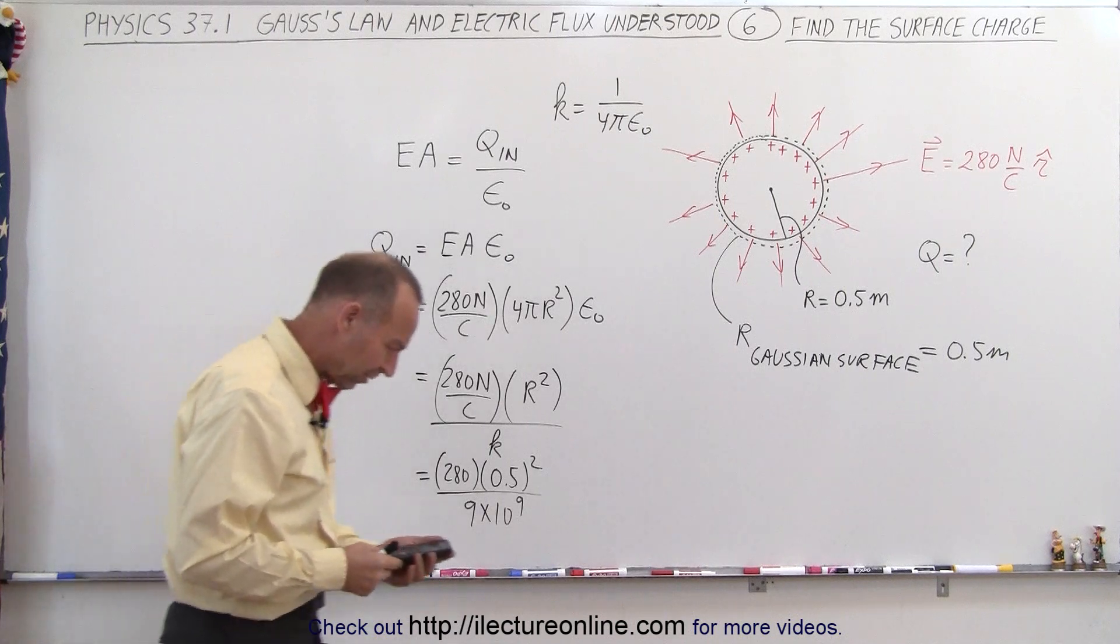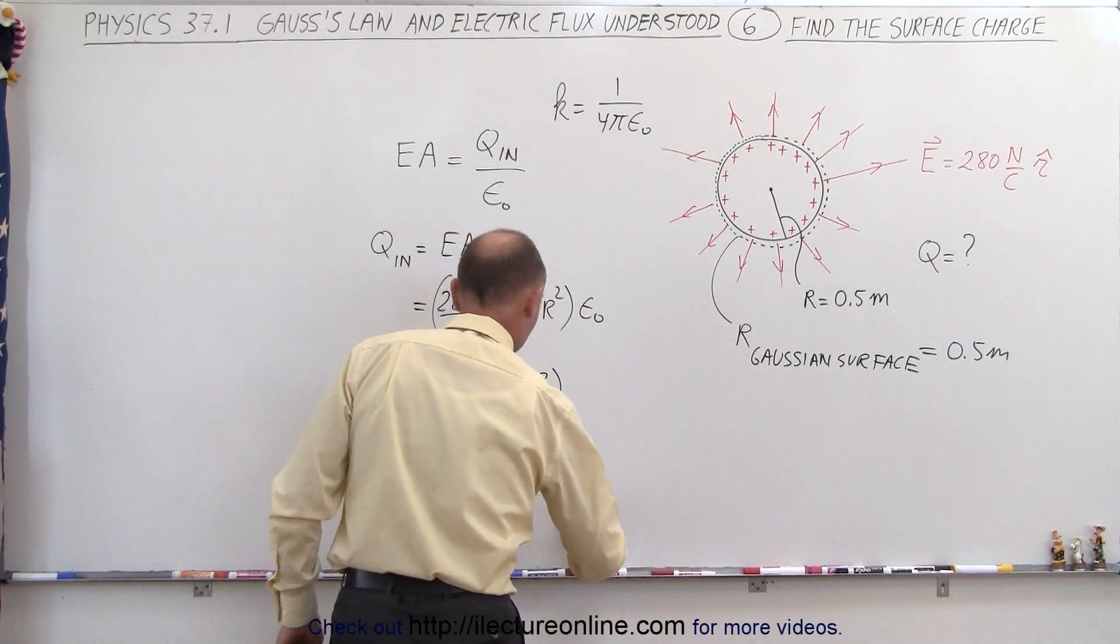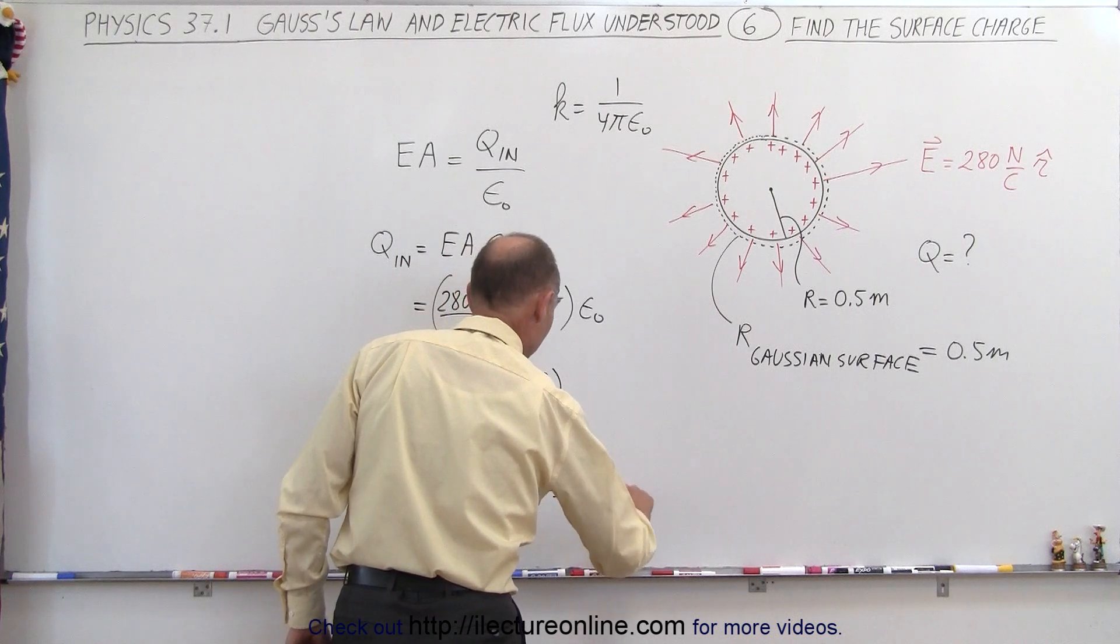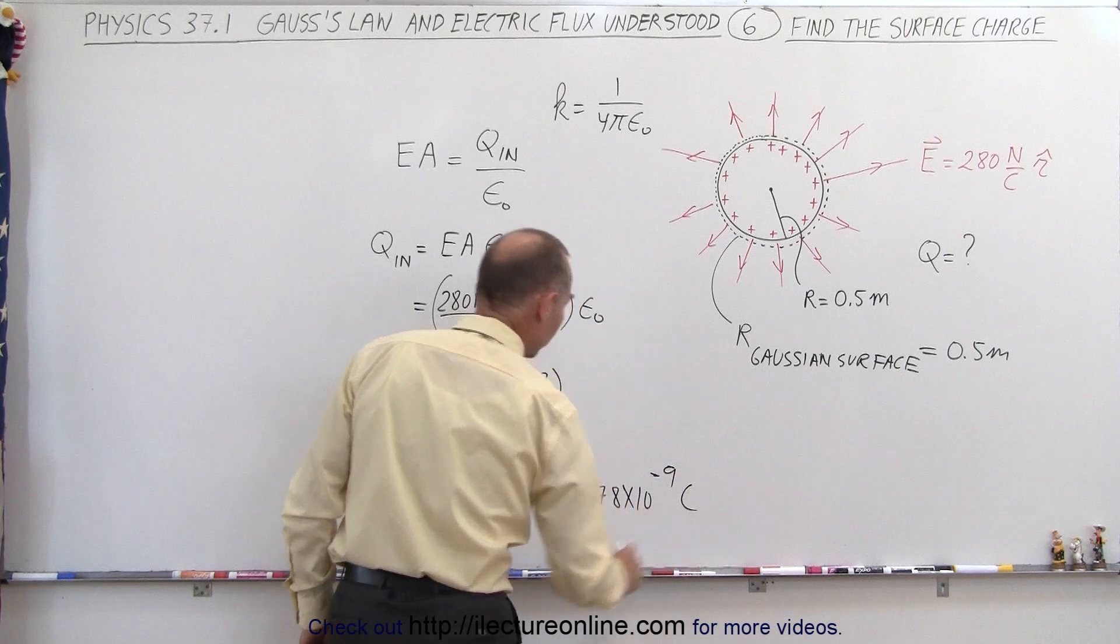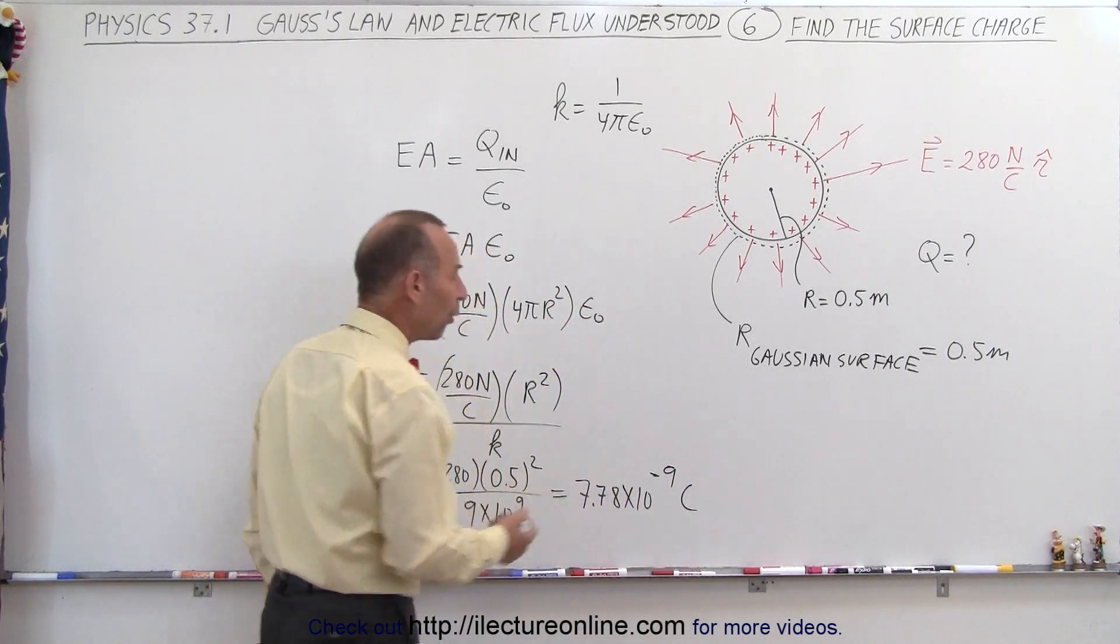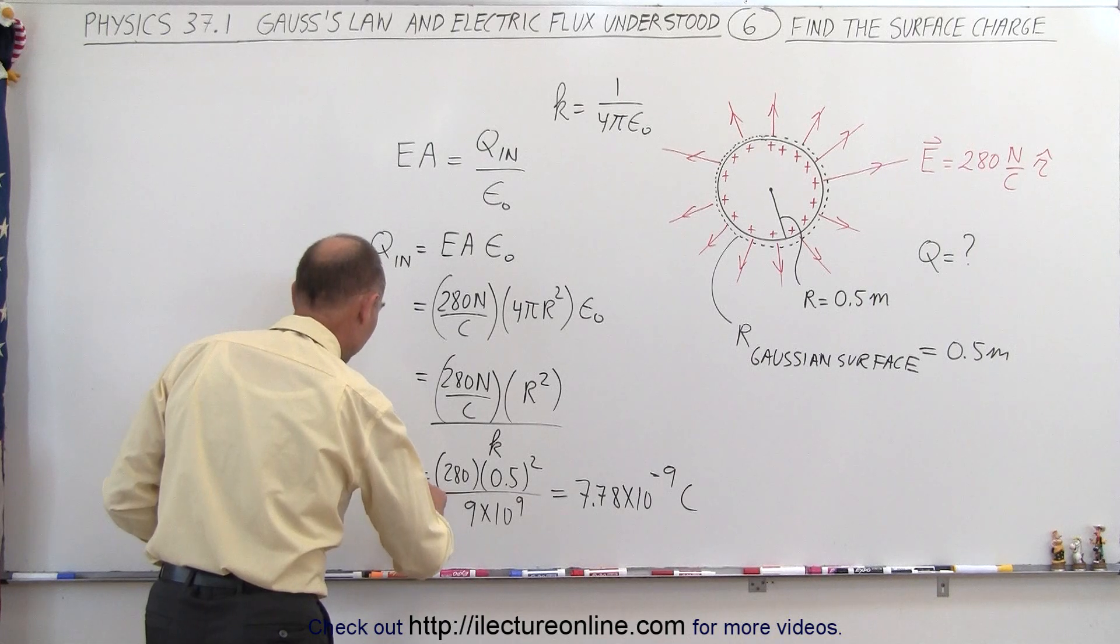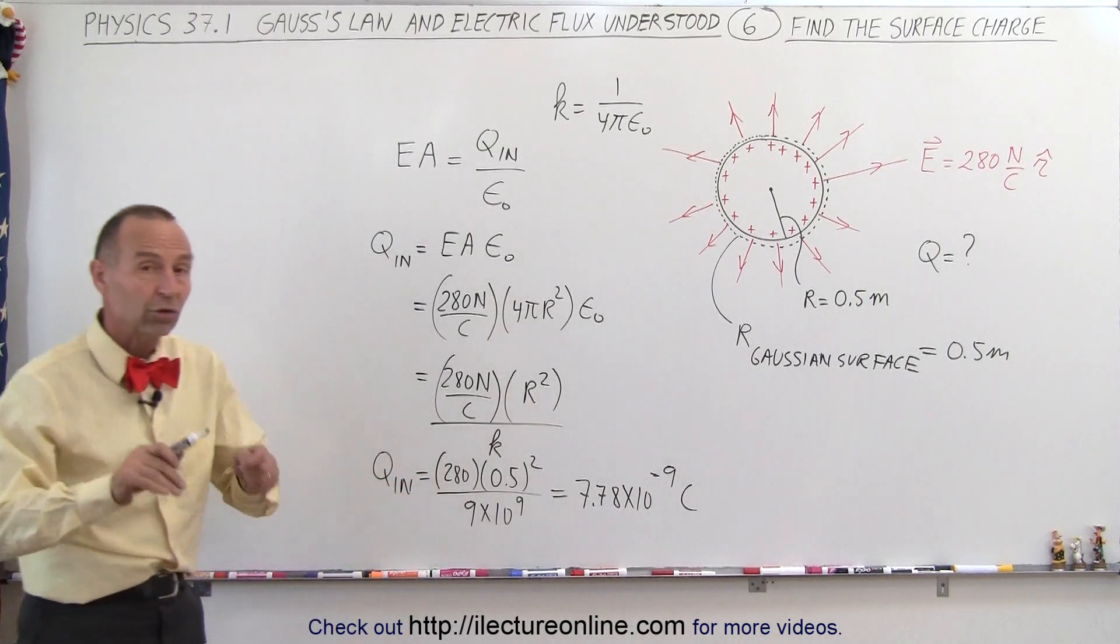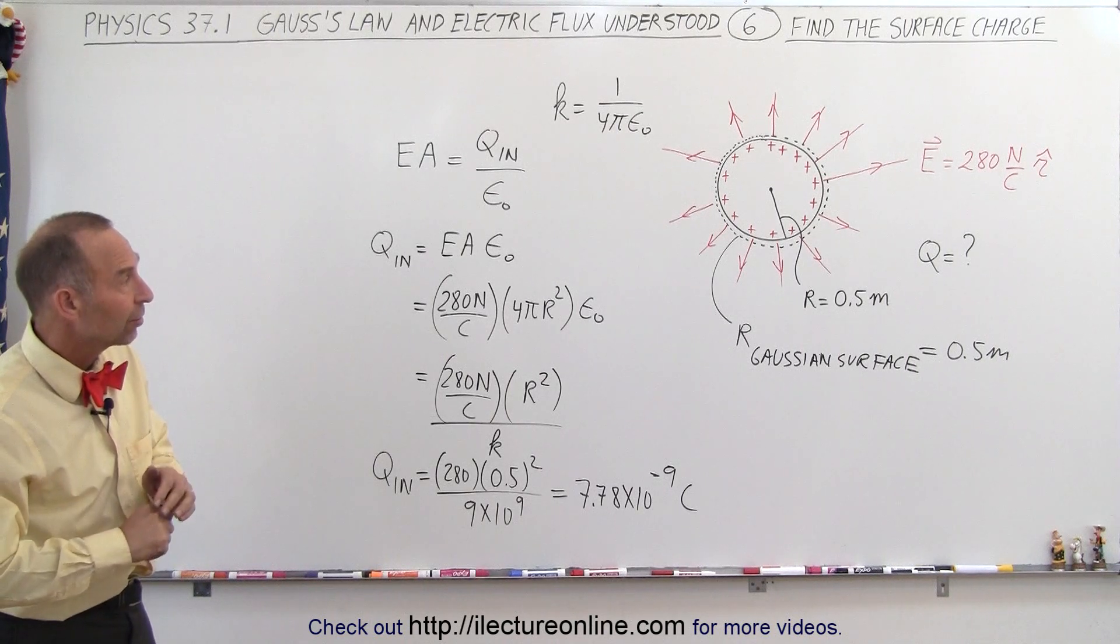And so it gives us 7.78 times 10 to the minus 9. So this is equal to 7.78 times 10 to the minus 9 coulombs. It's basically about 7.8 nanocoulombs, and that's the charge inside the Gaussian surface, which is also the charge distributed on the surface of that conducting sphere.